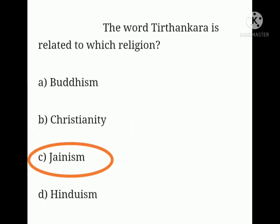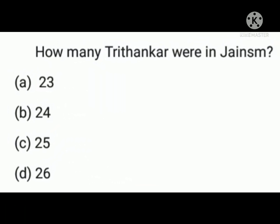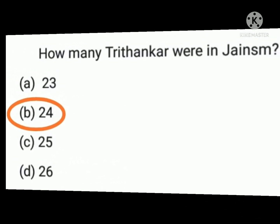Then the next question. How many Tirthankars were in Jainism? 23, 24, 25, or 26? The right answer is 24.